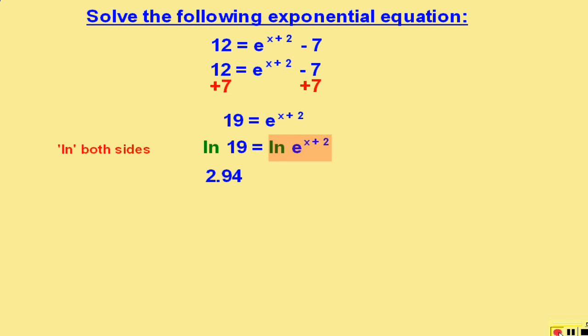And when we natural log e to a power, the answer will always be just the power. In this case, x + 2.